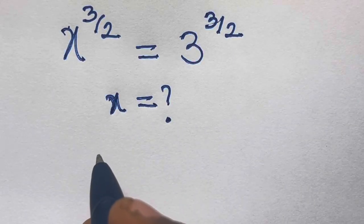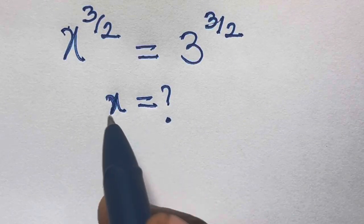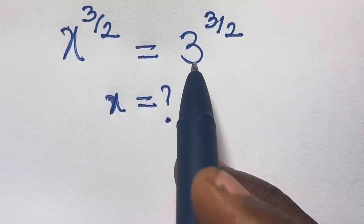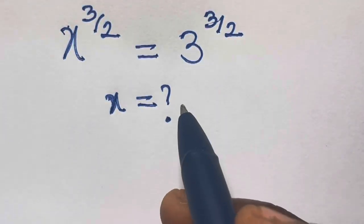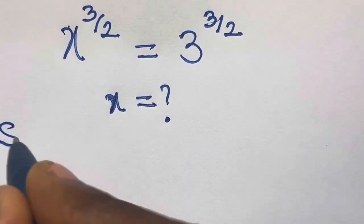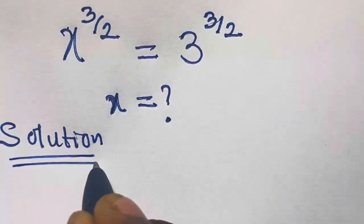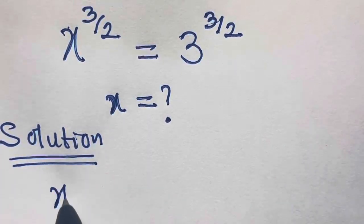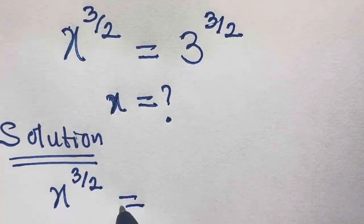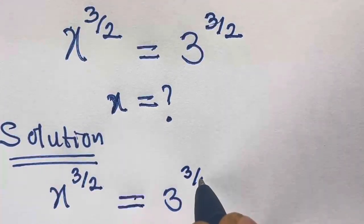Hi, welcome to mathematics. In this video we want to solve for x in x raised to the power 3 divided by 2 equals 3 raised to the power 3 divided by 2. So that's the problem we want to solve. We have x raised to the power 3/2 equals 3 raised to the power 3/2.